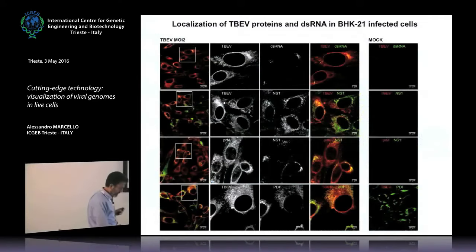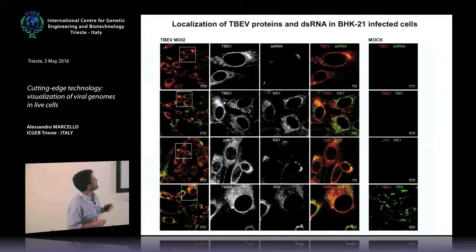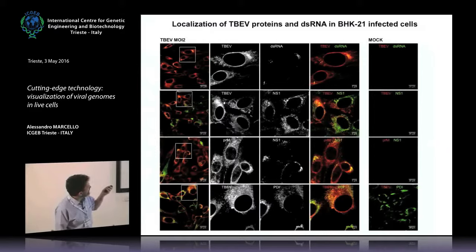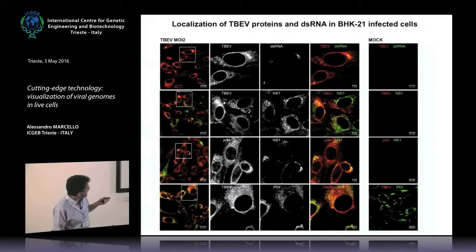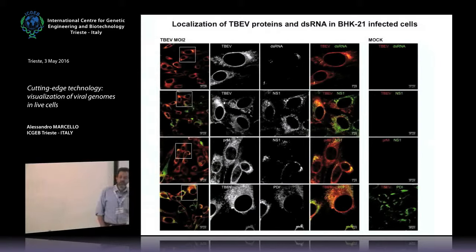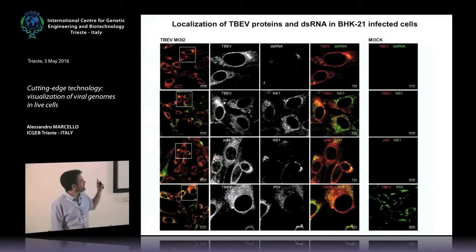We first did some classical immunofluorescence, and you can clearly see viral proteins all in the cytoplasm around the nucleus. This is double-strand RNA staining the replication complexes at the replication site of the virus in the cytoplasm. Another viral protein colocalizes with a marker of the ER, showing viral proteins in the ER. However, this is nice immunofluorescence/confocal colocalization, but it's at low resolution — we don't know what is going on at higher resolution.